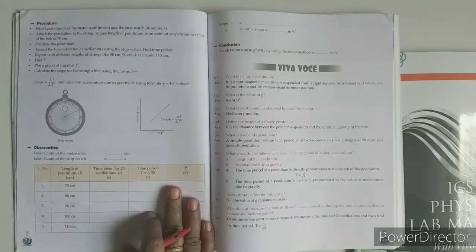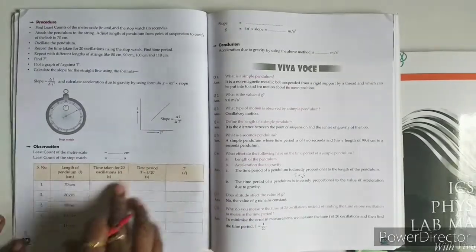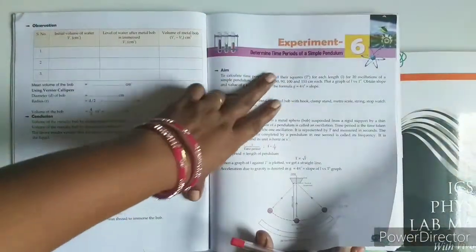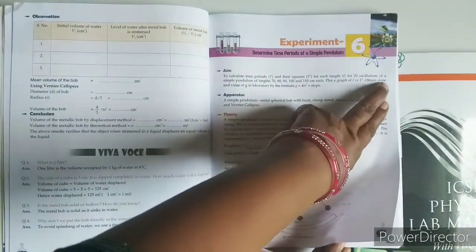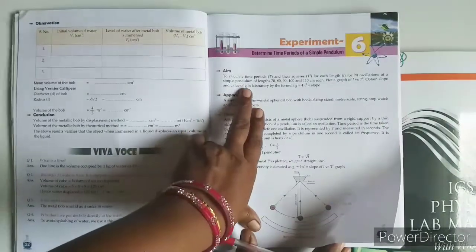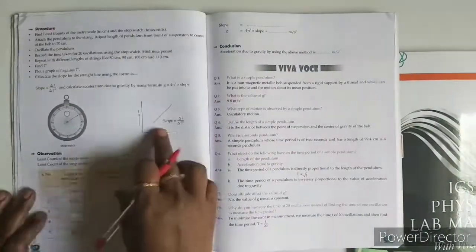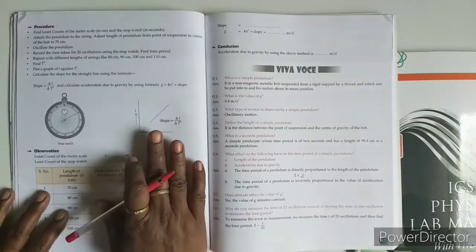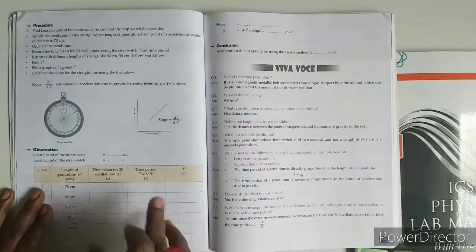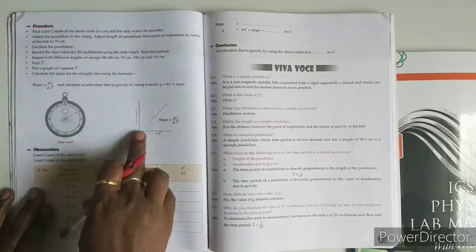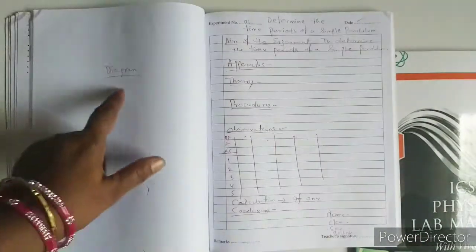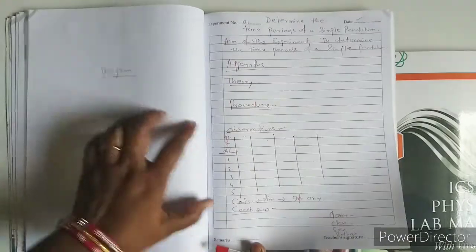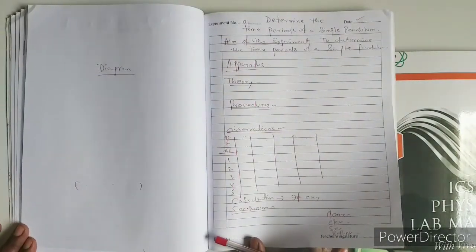If you are asked to plot a graph — for example, in the simple pendulum experiment where we plot the L-T² graph to find the slope and calculate acceleration due to gravity — take the data from your observations, take a graph paper, and plot the graph. After that, paste the graph paper next to the observation table on the left side. Thank you.